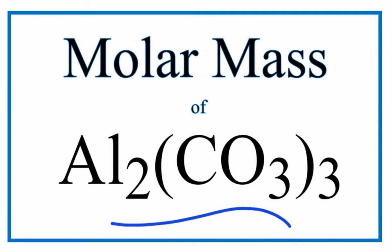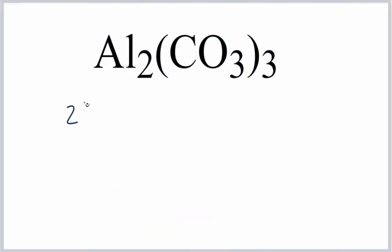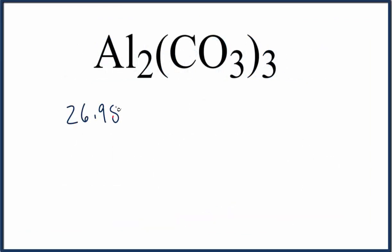To find the molar mass or molecular weight for aluminum carbonate, we know that aluminum is 26.98 from looking at the periodic table. And then because we have two of them, we'll multiply that number by two.